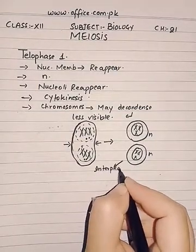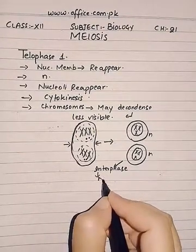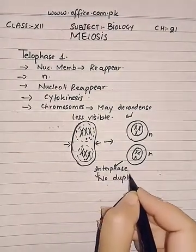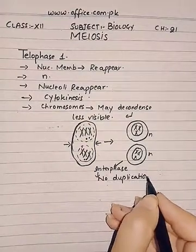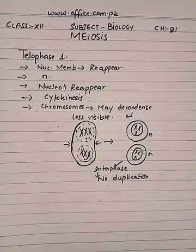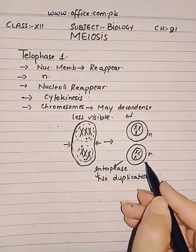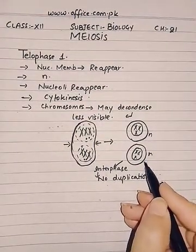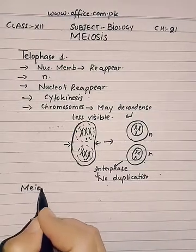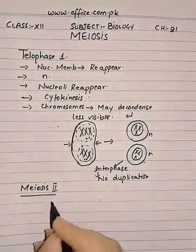After this, the cells may go into interphase, just as in mitosis, but here there will be no duplication — just a resting phase. After that they will experience a similar cell division like mitosis, which will be known as meiosis two.